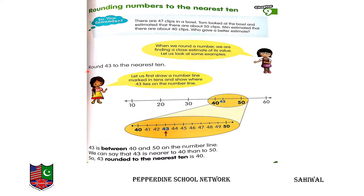Round 43. Now we will learn how to round off 43. Let us first draw a number line, marking the 10s and showing where 43 lies. We will make a number line and show the multiples of 10: 10, 20, 30, 40, 50, 60. Then we see that from 40, three numbers forward gives us 43.